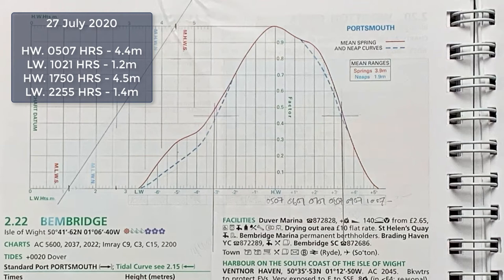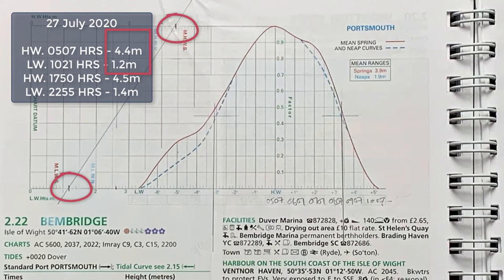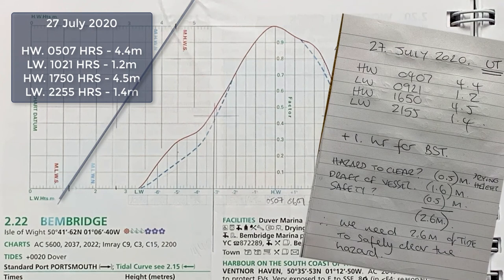We've got the high water and low water times and heights. So we go to our tidal curve for Portsmouth and transfer the relevant high water and low water onto the depth scale at the bottom and top of the chart. We have a low water and a high water scale — high water at the top, low water at the bottom. So we put in 1.2 metres and 4.4 metres, then draw a linear line representing the difference between high and low water onto our chart. Once that's in place, we put in the 2.6 metres we need and transfer that across the tidal curve, which shows the characteristics of tidal flow into and out of Portsmouth.